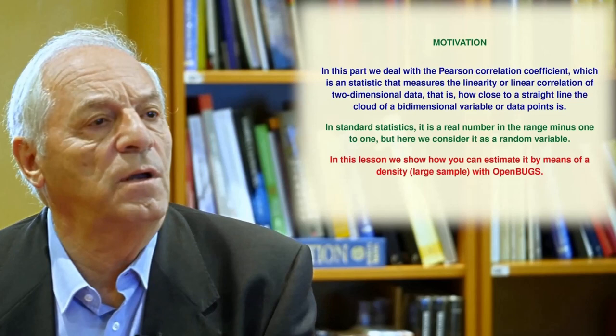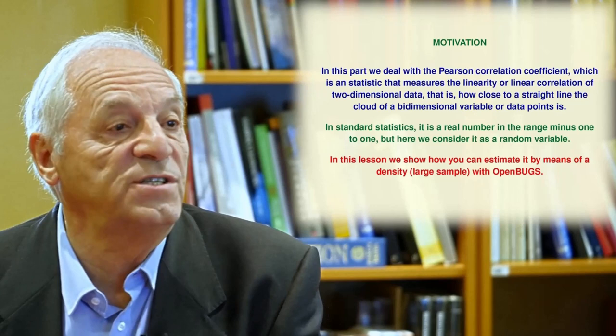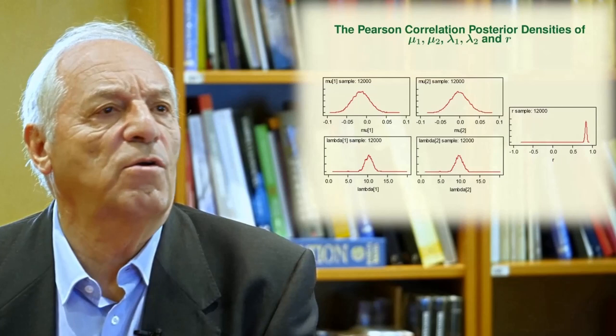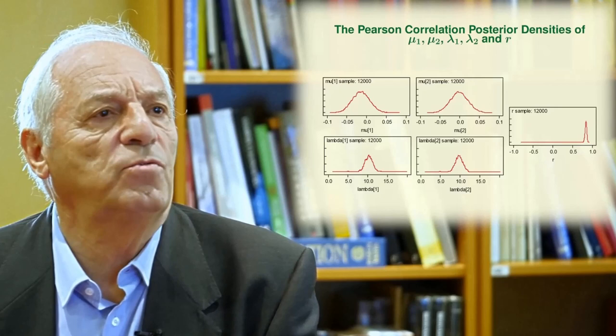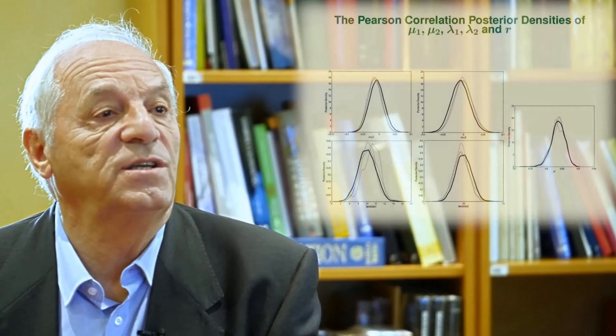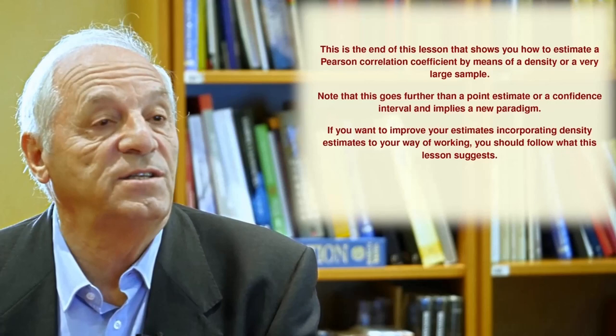The next lesson is dedicated to the Pearson correlation example. We describe the meaning of this statistic — in standard statistics this number ranges between minus 1 and 1, but it is a single constant. In this lesson, however, we want to estimate it as a density. We use a normal model that depends on two mean values, two dispersion values lambda1 and lambda2, and the Pearson correlation coefficient r. We can give the densities of all these parameters, which is very interesting. The Pearson correlation coefficient is estimated by a density and not, as usual, by confidence intervals or a point estimate.